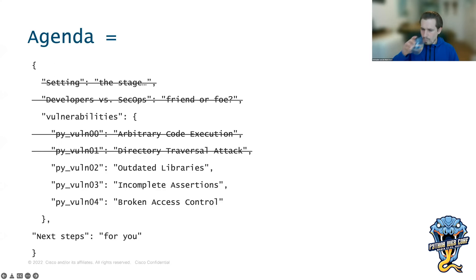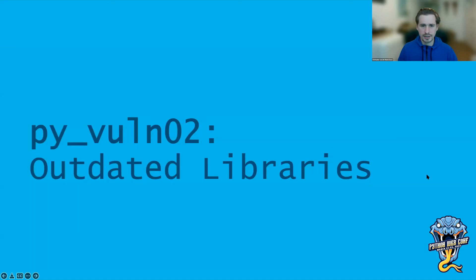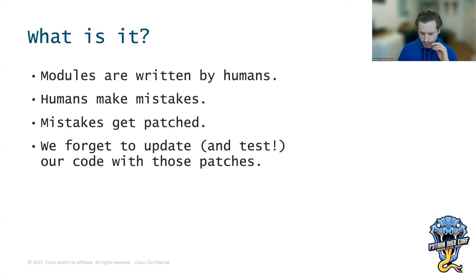We've now covered two of the five vulnerabilities. Let's continue. Outdated libraries might be one of the most common vulnerabilities. Modules and libraries are written by humans, humans make mistakes, mistakes get patched — but what often happens is we forget to update and test our code with those patches.